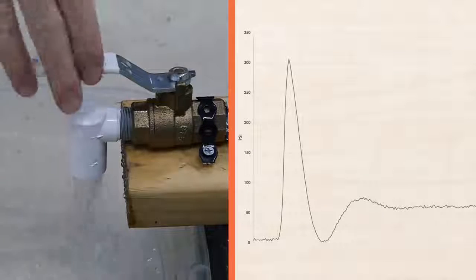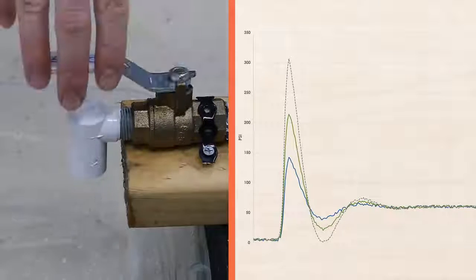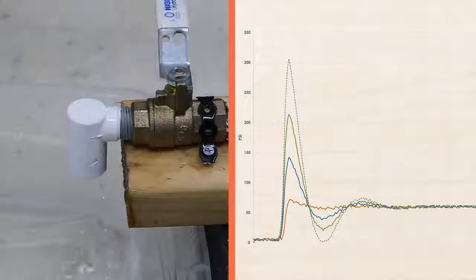In this case, my pipe size is fixed, but I can reduce the flow rate to limit the velocity. Each time I reduce the velocity and close the valve, the resulting spike in pressure decreases.